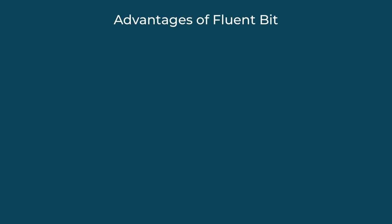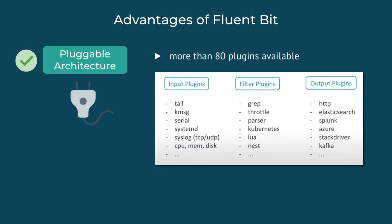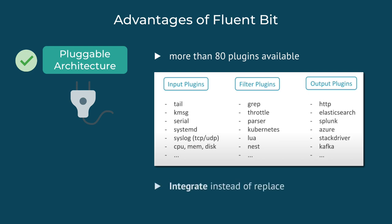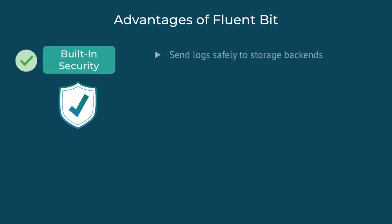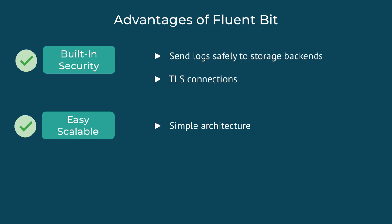Some other advantages of FluentBit are that it has a pluggable architecture. As a log collector, it doesn't try to replace the data sources like systemd or journald — instead, the goal is to integrate with different data sources by talking to TCP, reading logs from a file system, talking to the systemd API, etc. It also has built-in security because when you're sending logs from the cluster out to storage backends, you're talking to third-party services, and you want to use HTTPS or TLS for that connection. It has a simple architecture which makes it easy to scale FluentBit on hundreds of servers, since FluentBit runs on each node in the cluster.